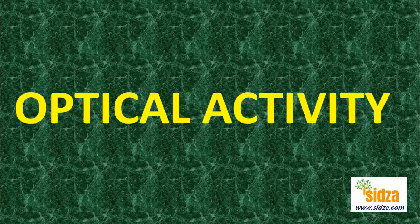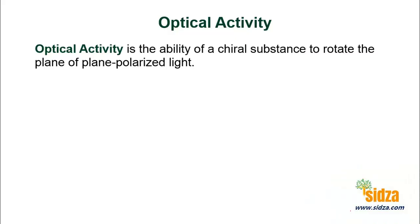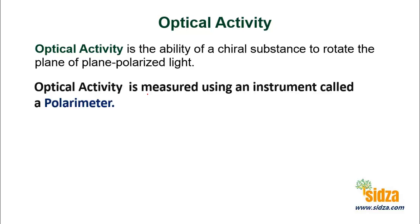Optical activity and optical isomerism. Optical activity is the ability of a chiral substance to rotate the plane of the plane polarized light, and this optical activity is measured using an instrument called a polarimeter.